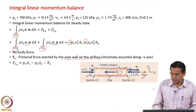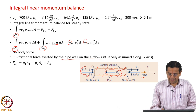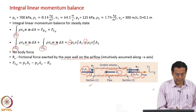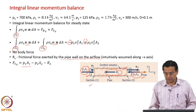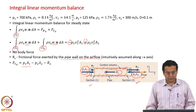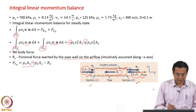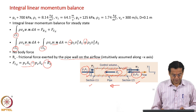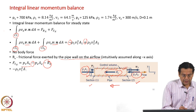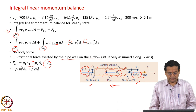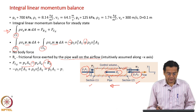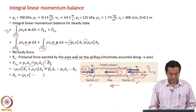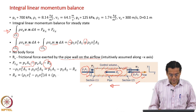For surface forces, there is also a pressure contribution because the pressure differs at inlet and outlet. At the inlet, the pressure force is P₁A₁ acting into the control volume along the positive x axis. At the exit, the pressure force is P₂A₂ along the negative x axis, giving −P₂A₂. With Rx taken along the negative x axis, we have −Rx. Substituting into the integral momentum balance and rearranging for the frictional force Rx.